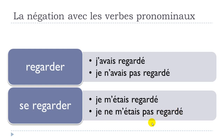A common mistake is to put PAS at the very end of the sentence. Remember, it should not go there — it must come right after AVOIR or ÊTRE in compound tenses.